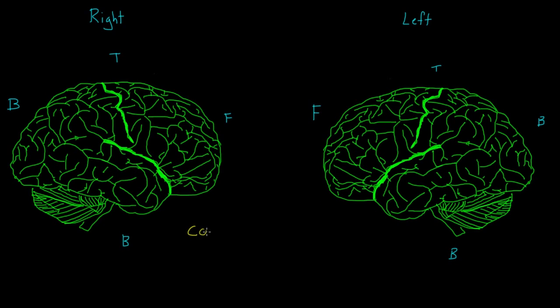The first thing that I want to talk about is contralateral control. And what that means, for the most part, is that the left side of the brain controls the right side of the body, and vice versa. So the right side of the brain controls the left side of the body.